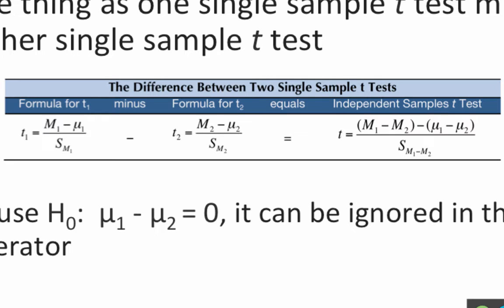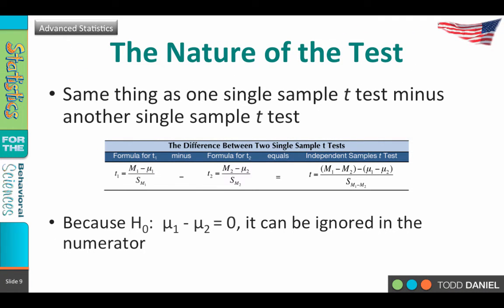If we were to take two of these one-sample t-tests and combine them — one t-test minus the other to see if there is a difference — it would look like this formula: m1 minus m2, minus mu1 minus mu2, all over the estimated standard error of the mean, which is s sub m1 minus m2. Now most of the time we do not know the mean of the population from which the samples were drawn. We could estimate it using the sample mean, but we don't know it, and this could be a problem.